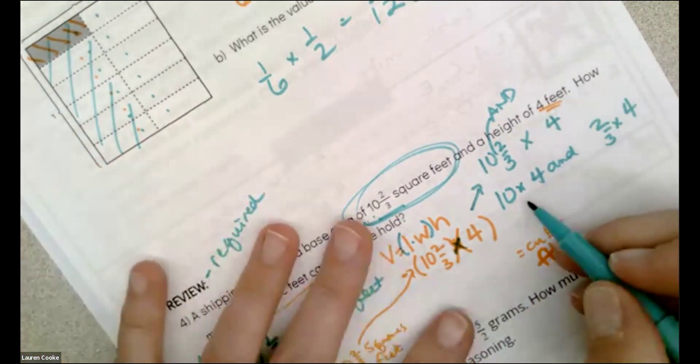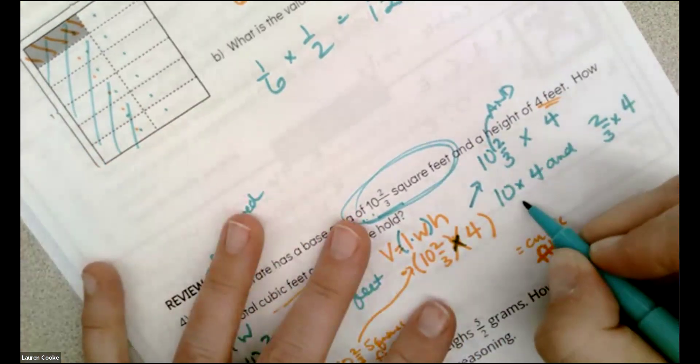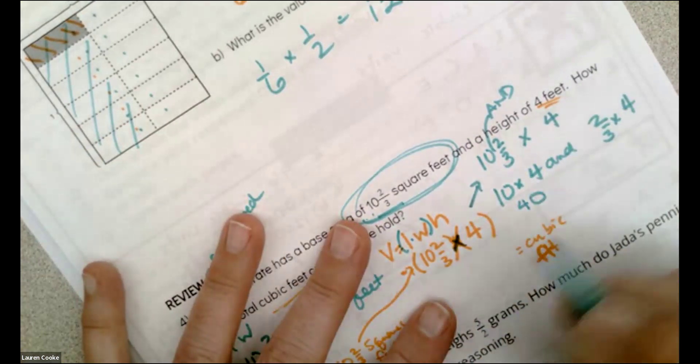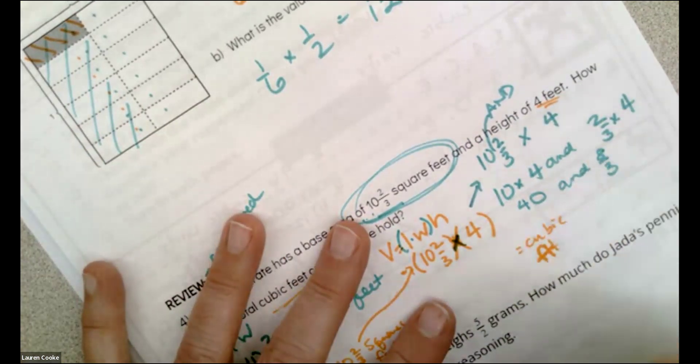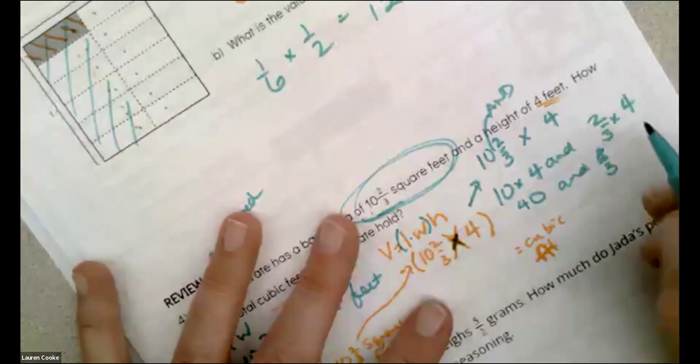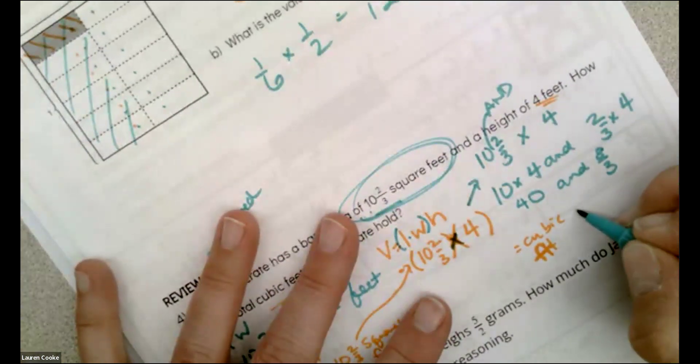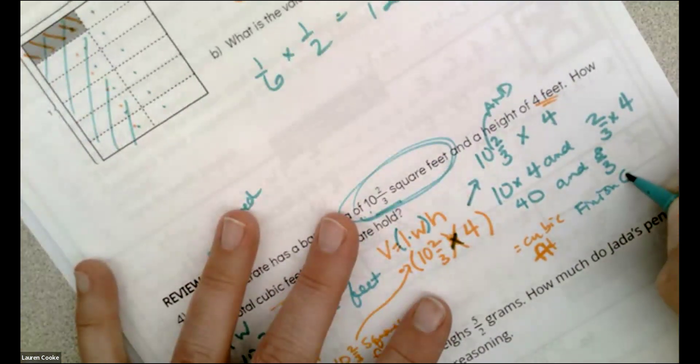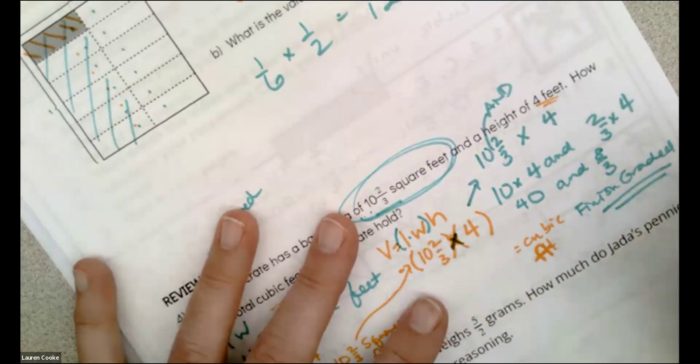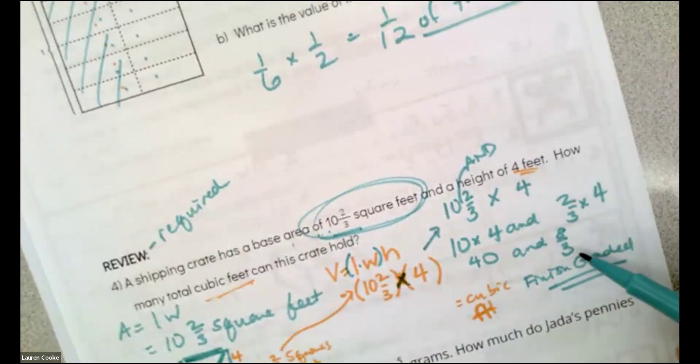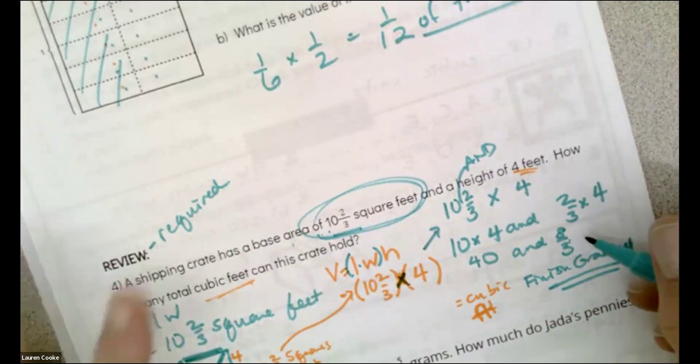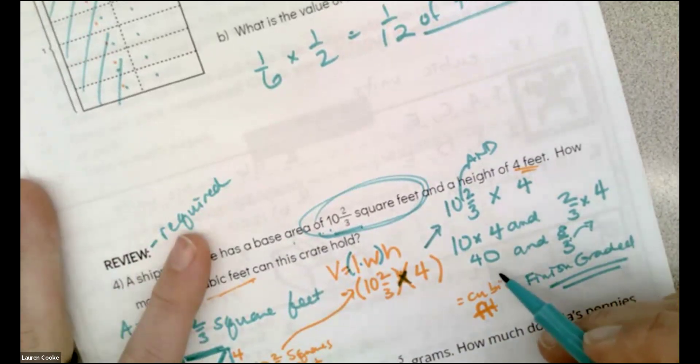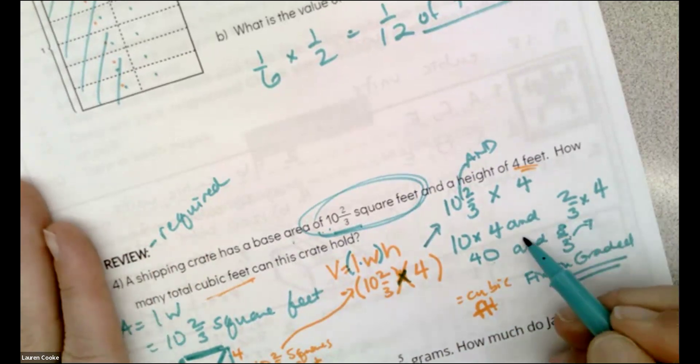Times four. Remember it's 10 and two-thirds, so I have 10 and two-thirds and they're both times four. And then I'm solving both. 10 times four is 40 and two-thirds times four is eight-thirds. I'm going to leave this for you to do to finish graded because I want to see you convert this to a mixed number and then add it to 40.